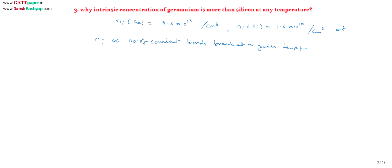These are the values at room temperature, at 300 Kelvin. At room temperature, in germanium, 2.5 × 10¹³ covalent bonds are broken, creating that many free electrons in the conduction band and that many holes in the valence band. Similarly for silicon. This implies Ni is a function of temperature — as temperature increases, Ni increases.